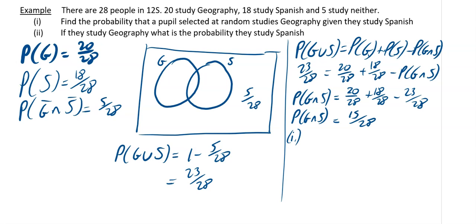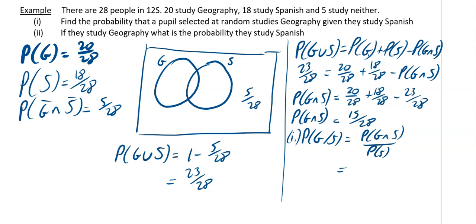For part 1, we want P(geography given Spanish). That is P(G intersect S) divided by P(S), which is (15/28) divided by (18/28). If you do that on your calculator you get 5/6.